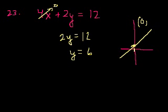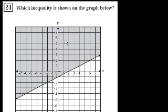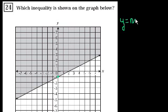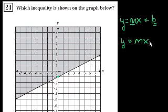Next problem. Which inequality is shown on the graph below? First, let's figure out the equation of this line. What's its y-intercept? When x is equal to 0, y is equal to minus 1. So if we put it in slope y-intercept form — the equation of any line is y equals mx plus b, where m is the slope and b is the y-intercept. Here, when x is 0, y is negative 1, so b is minus 1. We know that y equals mx minus 1.